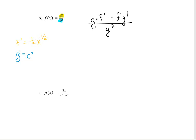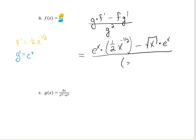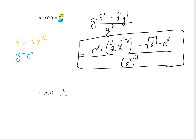So my derivative in this case would be e to the x times one-half x to the negative one-half, minus the square root of x times e to the x, all over e to the x squared. And you can simplify the answer out — I just want to see that you know how to apply the rules so that you're really understanding the calculus.